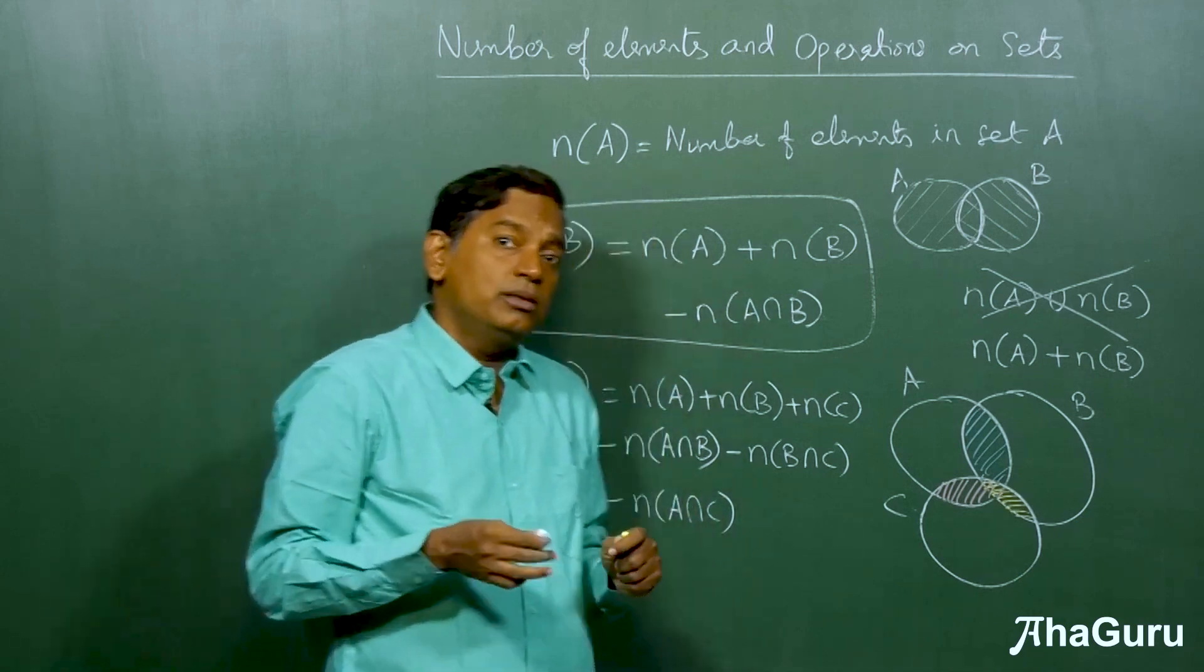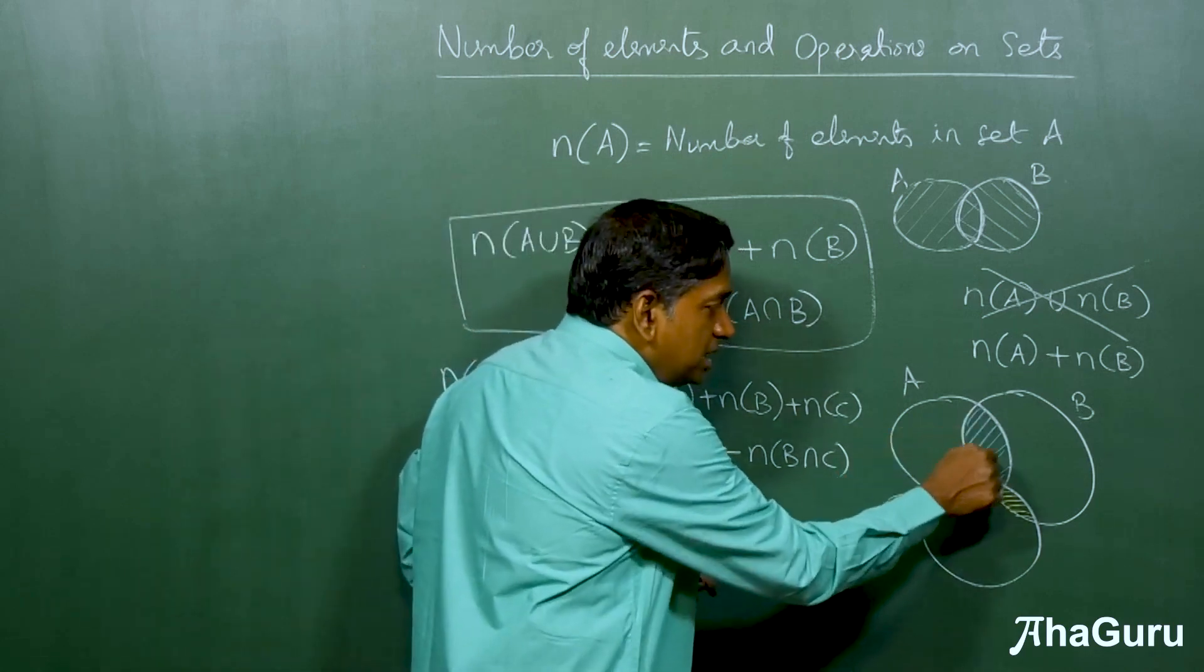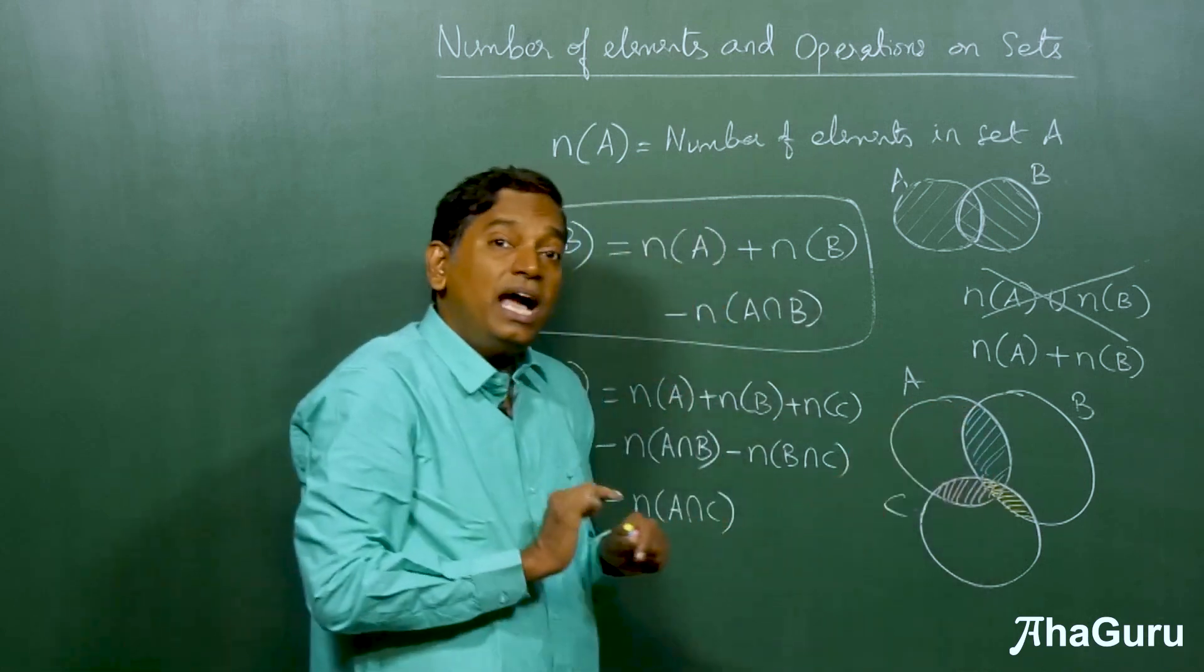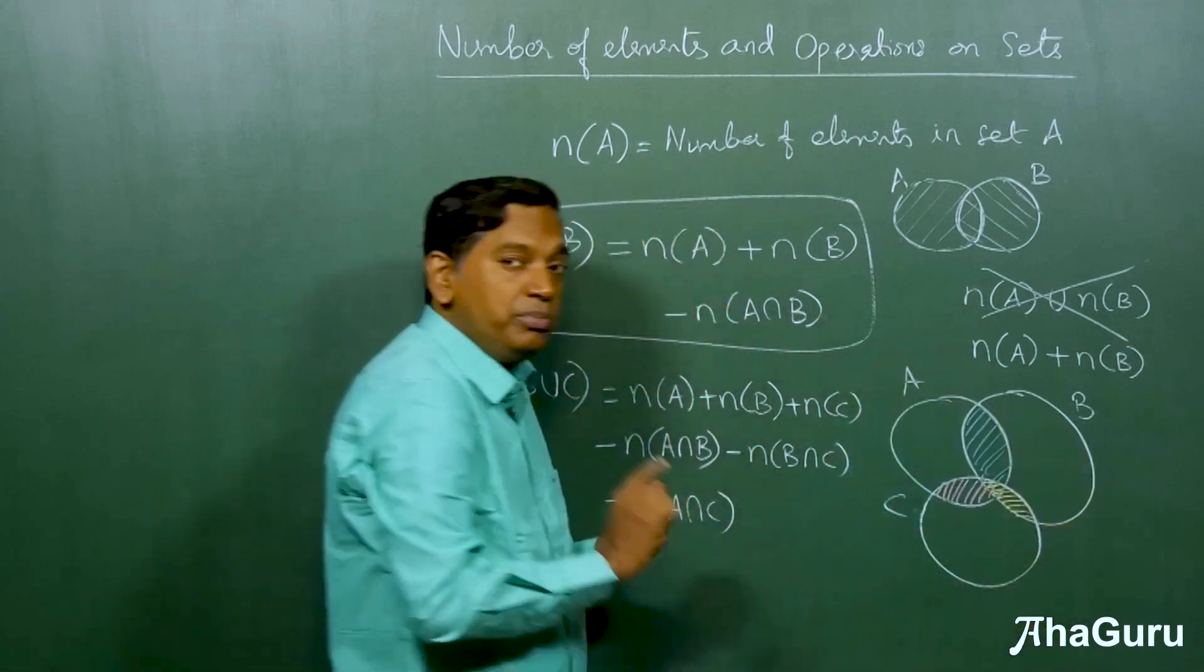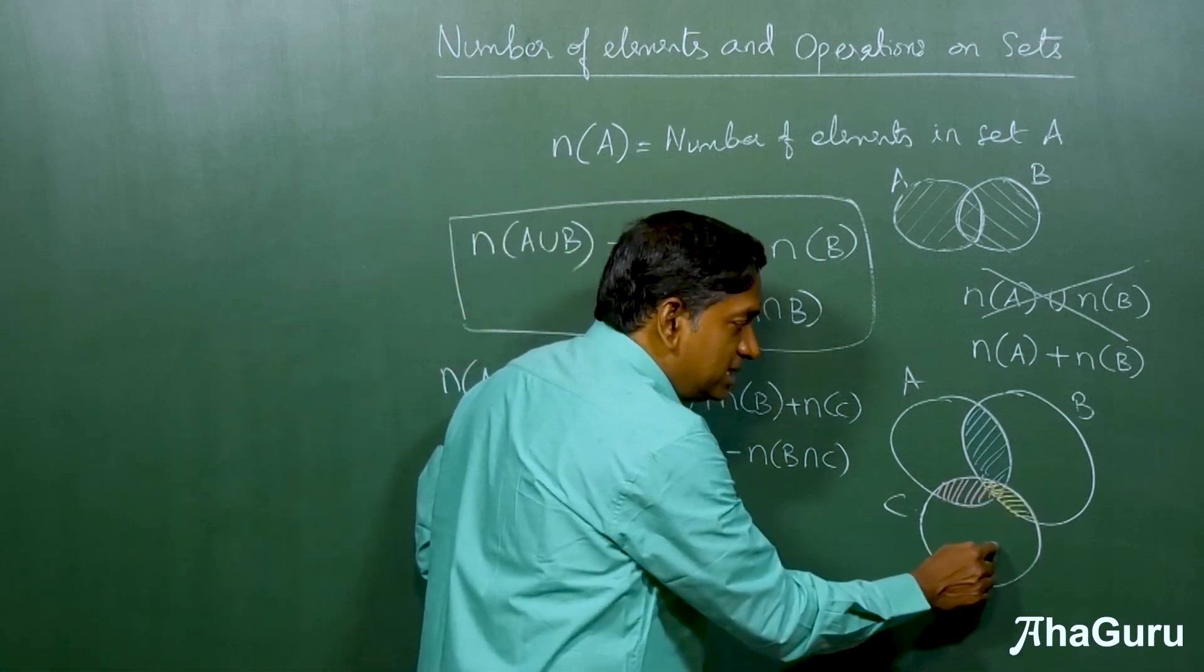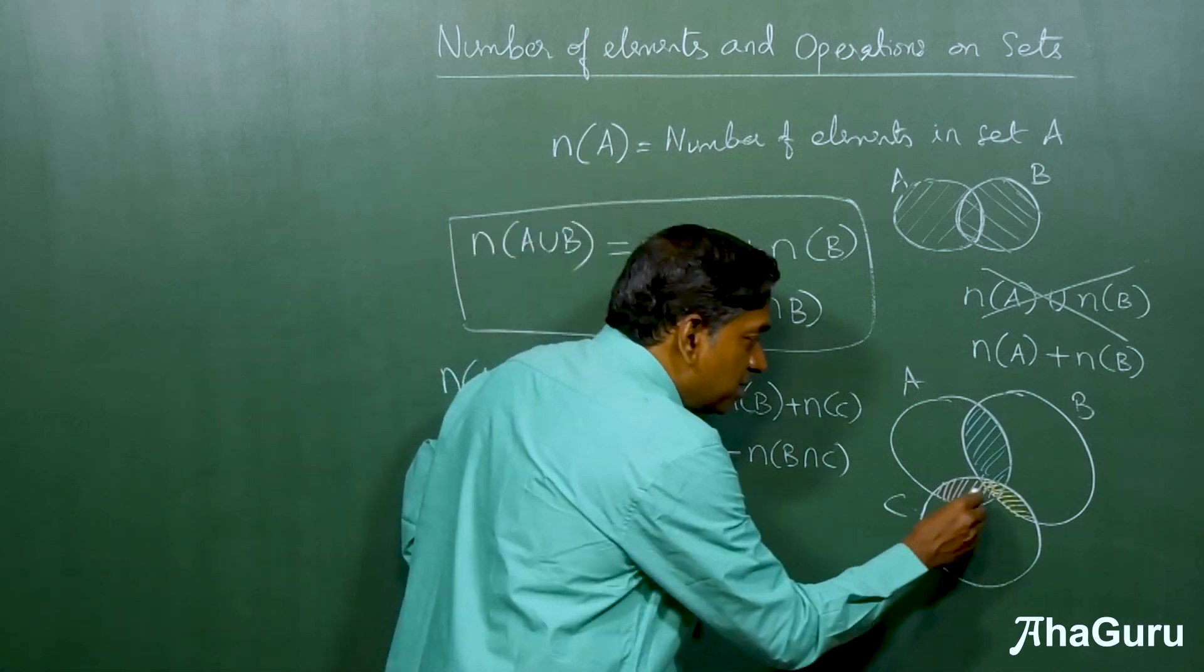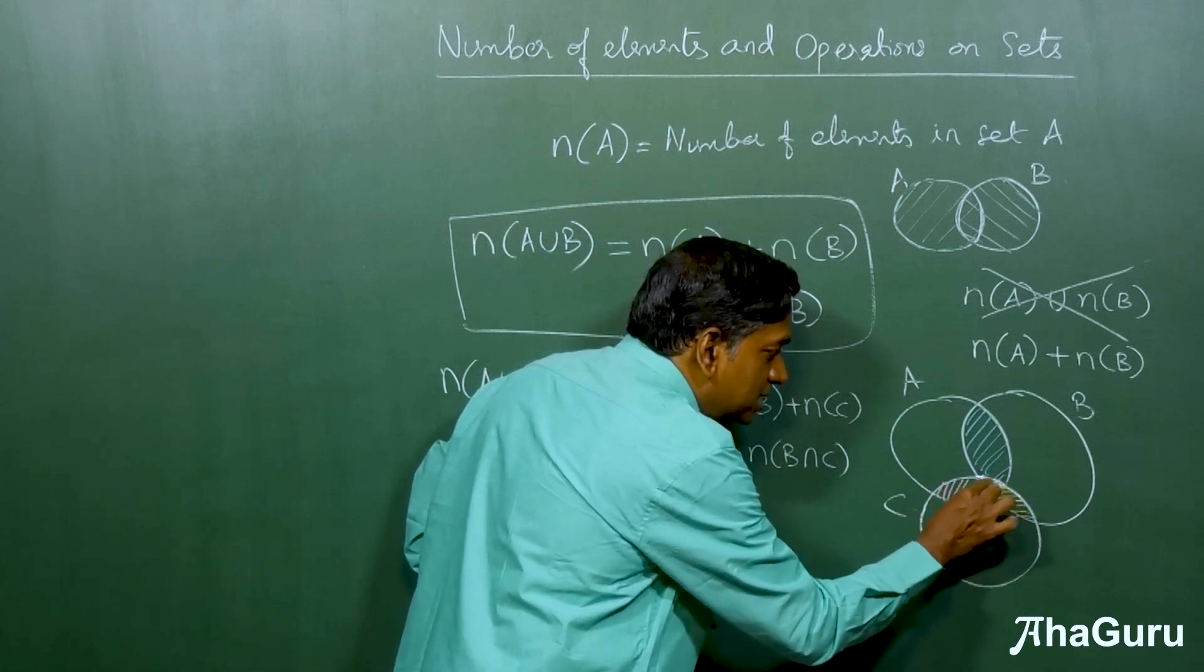This looks like we have solved all the problem. But there is an issue still. This blue region, if you see, we counted it once in A and once in B. And when we subtracted it, we subtracted it once from A intersection B. And therefore, it gets included exactly once in the overall A union B union C, which is what it should be. Same thing with this yellow region also. In B intersection C, it was counted once in B, once in C, then subtracted once. So it's correct. But the problem is when you look at this small region, which is A intersection B intersection C.